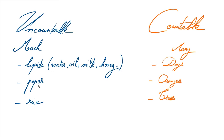PAPER is uncountable too, so we don't say TWO PAPERS — we say TWO SHEETS OF PAPER. It's like the word RICE: we're not going to say TWO RICES. There are several words like this which are uncountable, and I'm going to give you a list so you can learn them and avoid making mistakes.